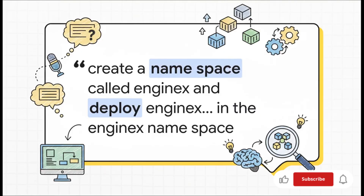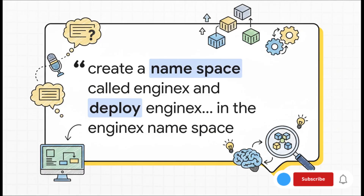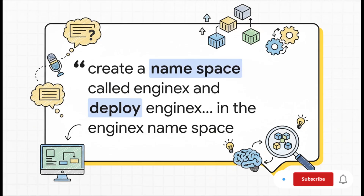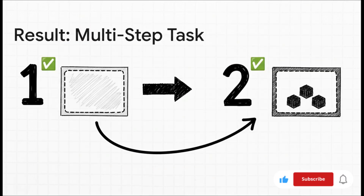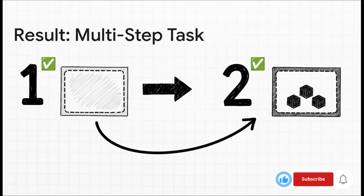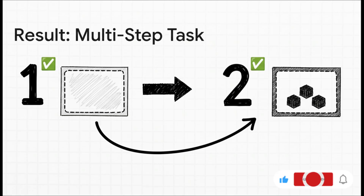Let's turn it up a notch with a two-step command. We're telling it to first create a brand new namespace, and then deploy our NGINX pod inside that new namespace. This is a great test to see if it can understand a sequence of actions. And it totally nails it. The AI figures out this is a two-part job — it creates the namespace first, and then creates the deployment right inside of it. This is a big deal, because it shows it's not just doing simple word-to-command translation; it's actually understanding the logic.